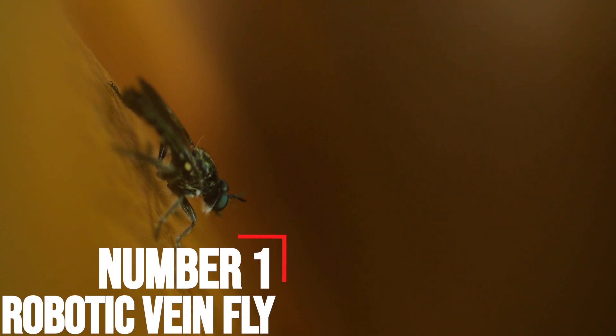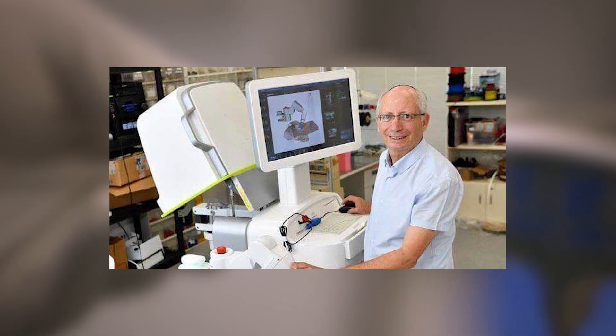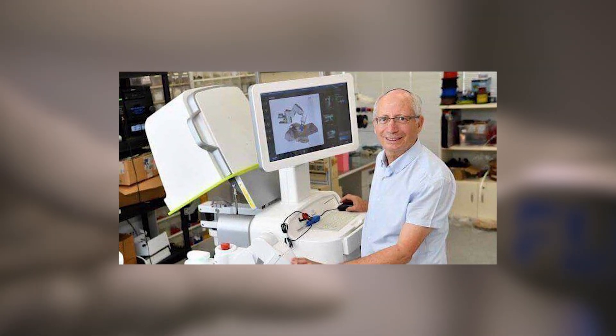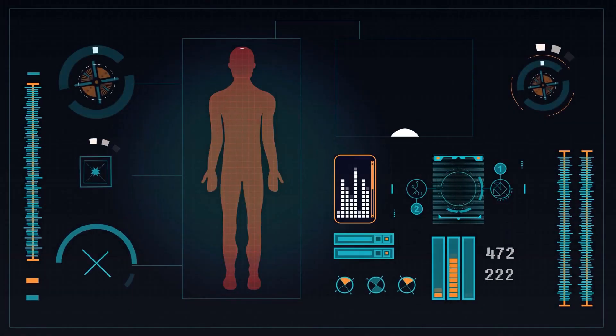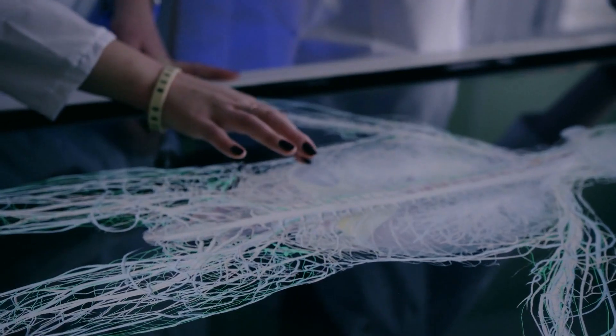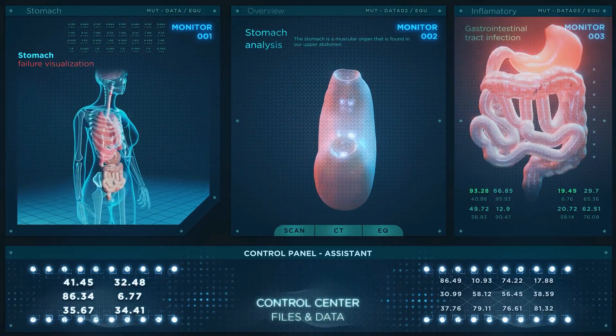Number one, robotic vein fly. When Technion professor Moshe Shoham was first working on autonomous crawling micro-robots that can navigate spaces within the human body, including the circulatory, digestive, and respiratory system, he dubbed it a robotic fly.